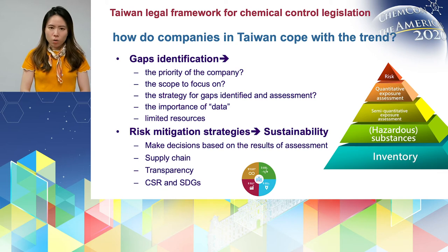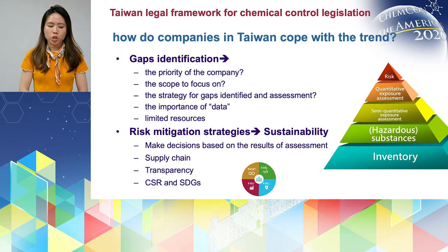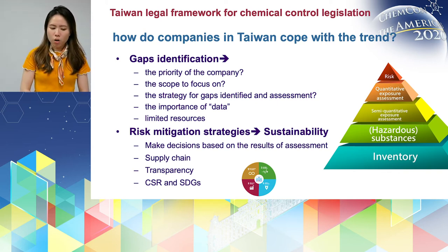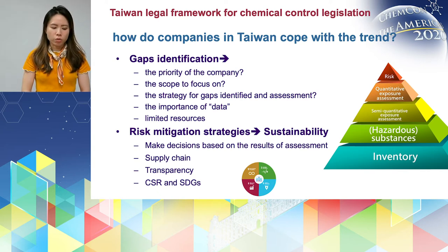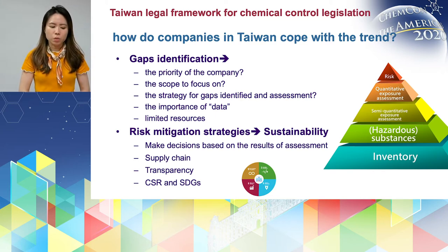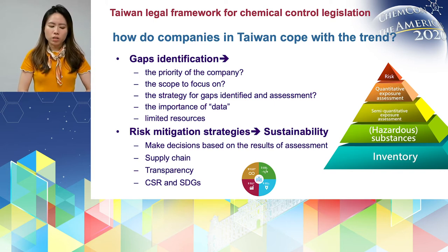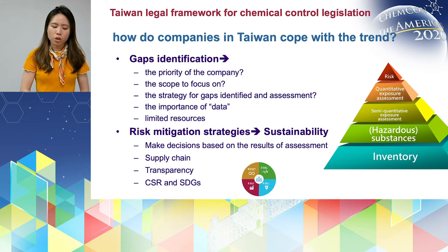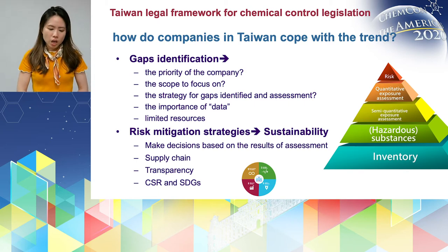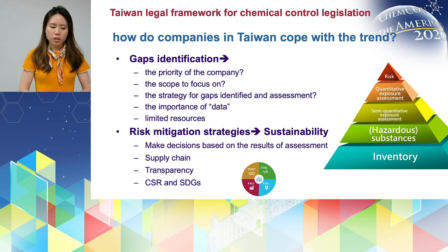We summarize some aspects companies are concerned about and their strategies to respond to challenges. First — and always the most important — is to identify the company's priorities and scope. Do you want to fulfill compliance only? Or do you want to do more, or establish a systematic way for future compliance? After deciding this, the next question is scope: is the focus on product safety only, or also workplace safety? For the cases I will bring up, they are both focused on workplace safety.